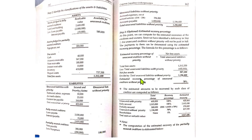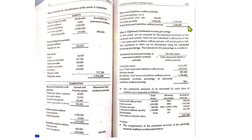Unsecured liabilities without priority are determined from the statement of financial position. Of the accrued expenses of 221,000, the 25,000 accrued salaries are unsecured with priority, so 196,000 remains as without priority. Accounts payable of 1,000,000 is also without priority. Including the 100,000 excess from the partially secured creditor, the total unsecured liabilities without priority is 1,296,000.